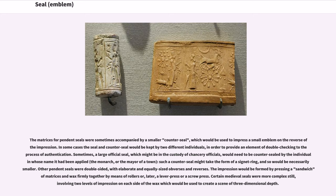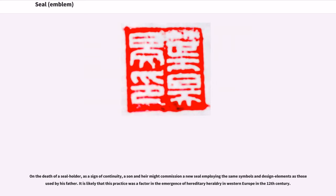Other pendant seals were double-sided, with elaborate and equally sized obverses and reverses. The impression would be formed by pressing a sandwich of matrices and wax firmly together by means of rollers or, later, a lever press or a screw press. Certain medieval seals were more complex still, involving two levels of impression on each side of the wax to create a scene of three-dimensional depth. On the death of a seal holder, as a sign of continuity, a son and heir might commission a new seal employing the same symbols and design elements as used by his father. It is likely that this practice was a factor in the emergence of hereditary heraldry in Western Europe in the 12th century.